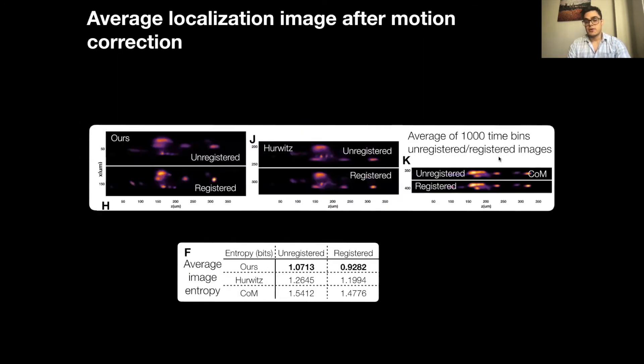Another way to evaluate motion estimation quality is by visualizing the average localization image before and after motion correction and computing its entropy. We can see that through our method, the localization image gains much sharpness after motion correction, yielding brighter and more globular shapes for units. Whereas the other two localization images from after doing registration do not show as much gain in entropy.